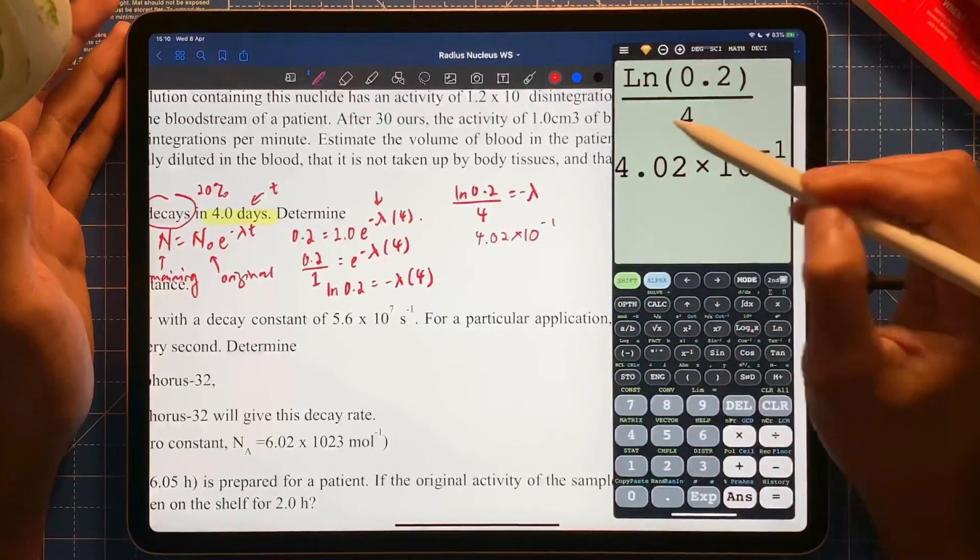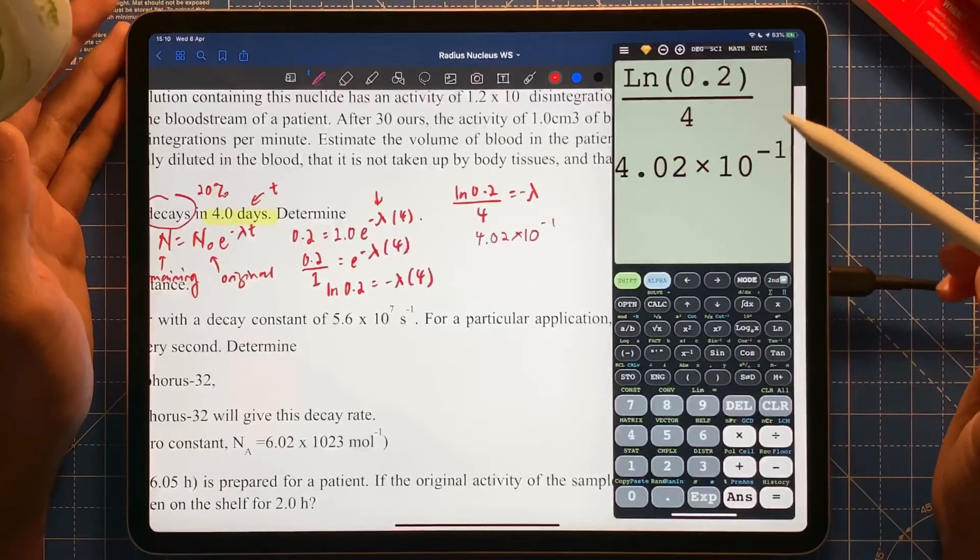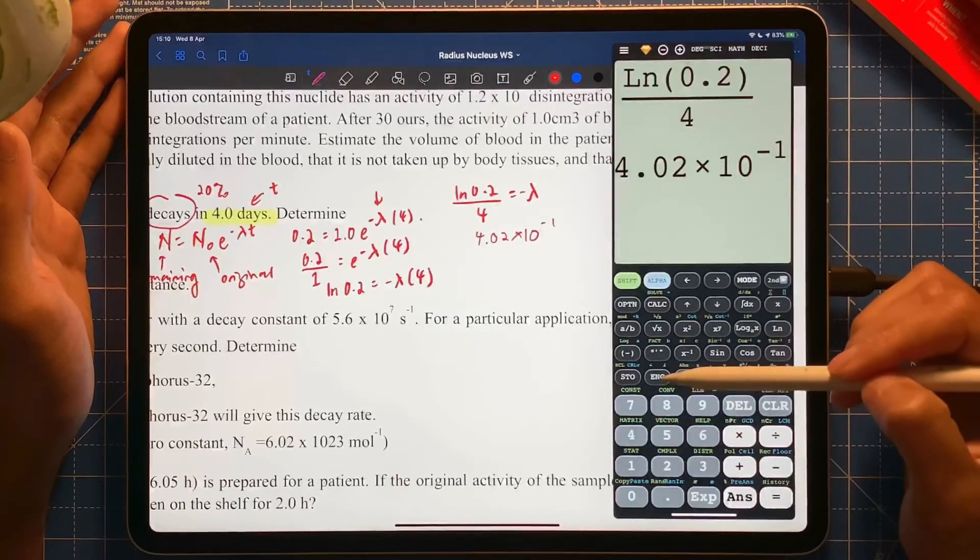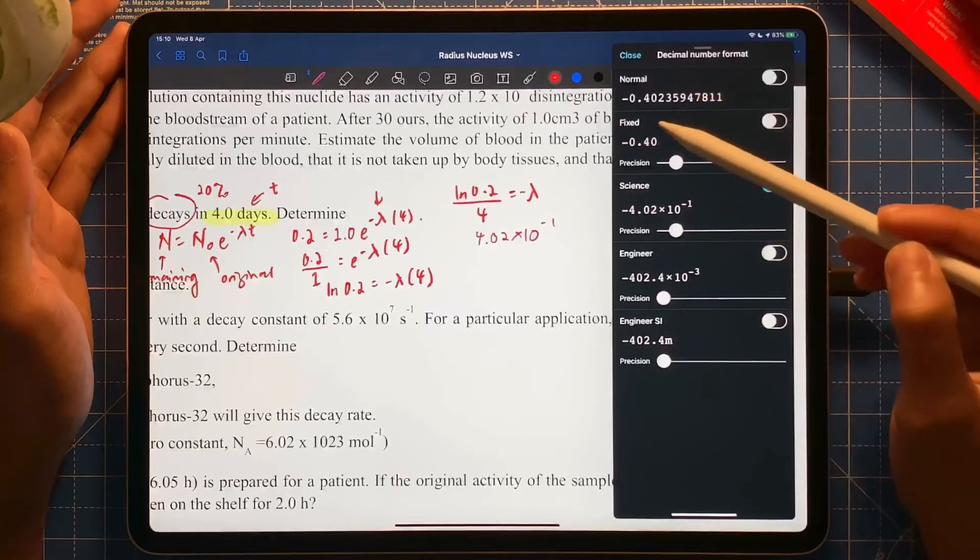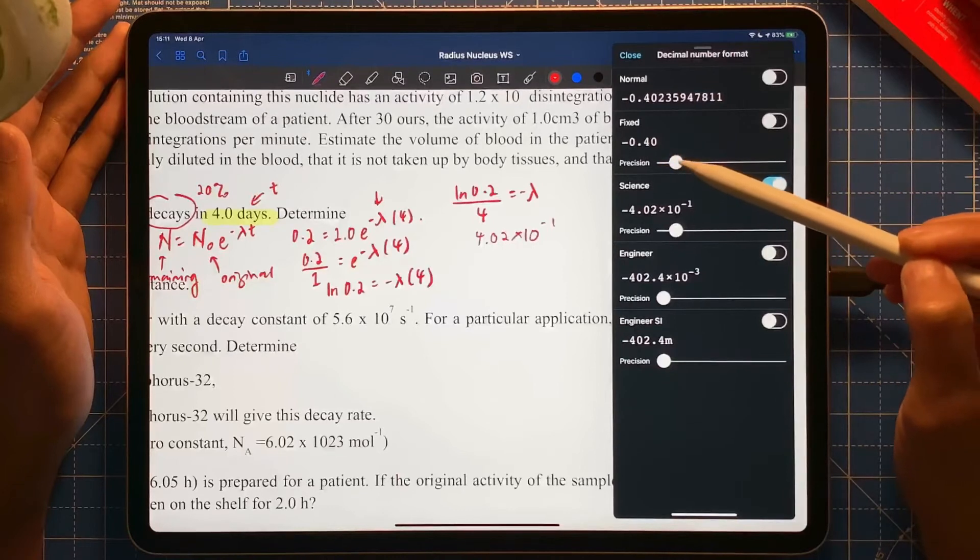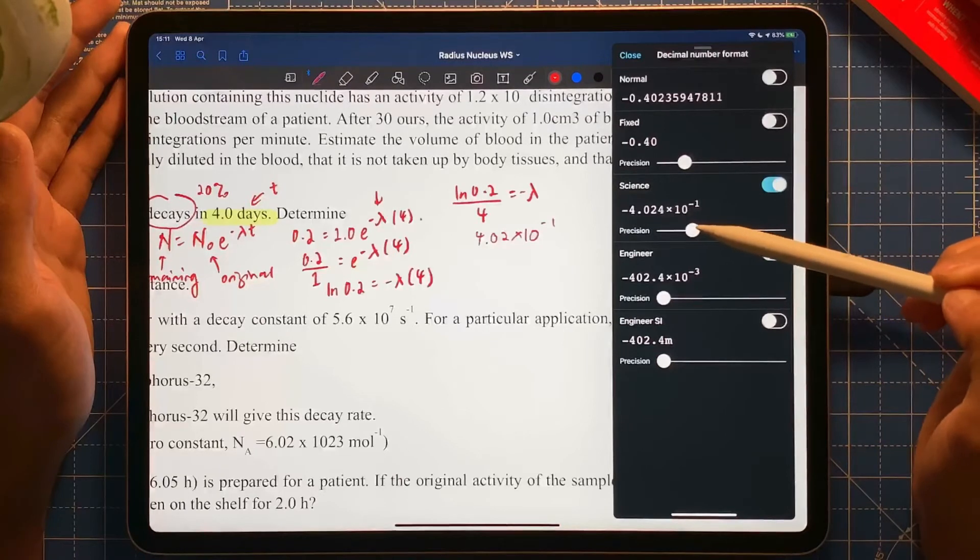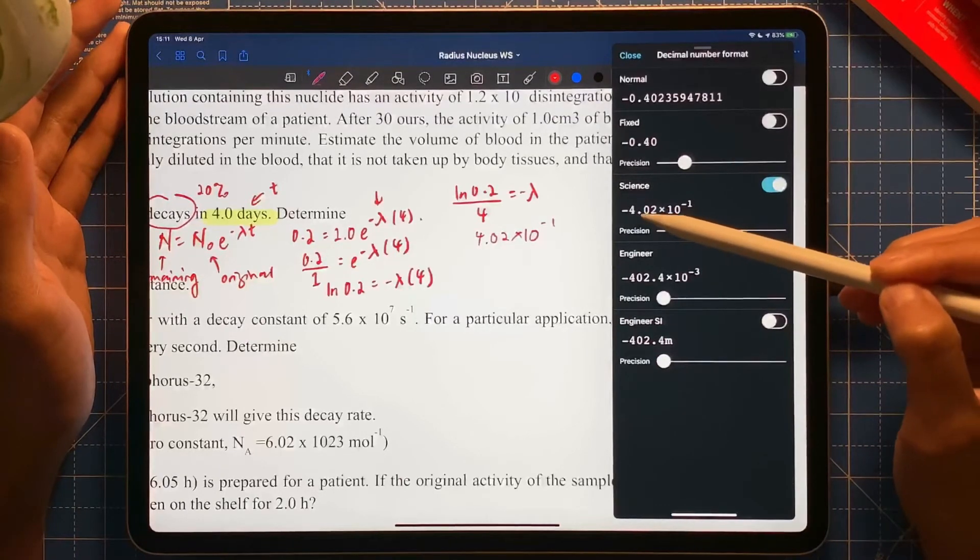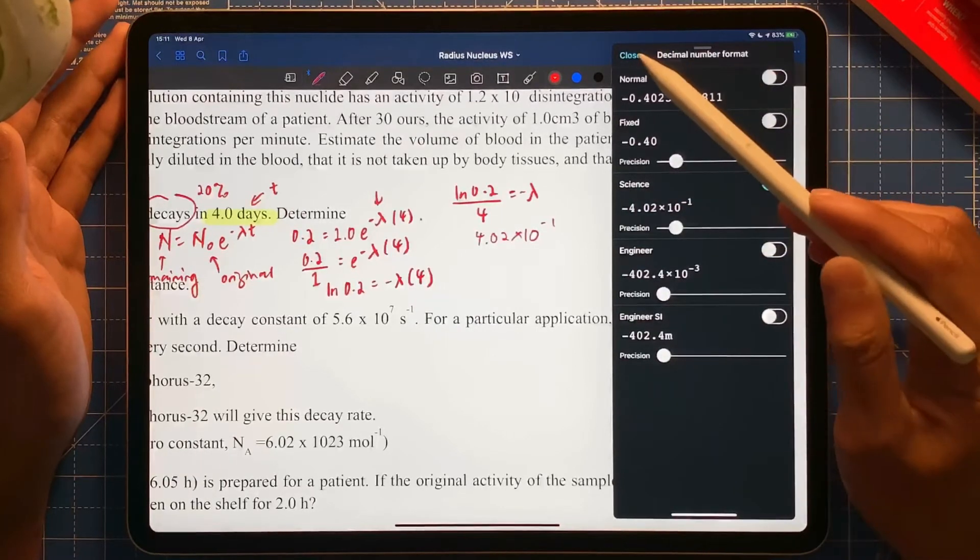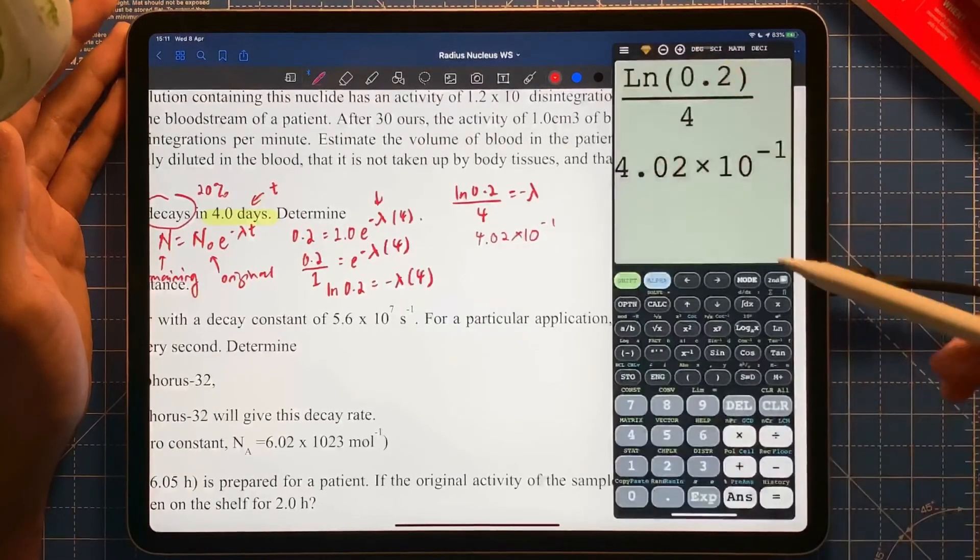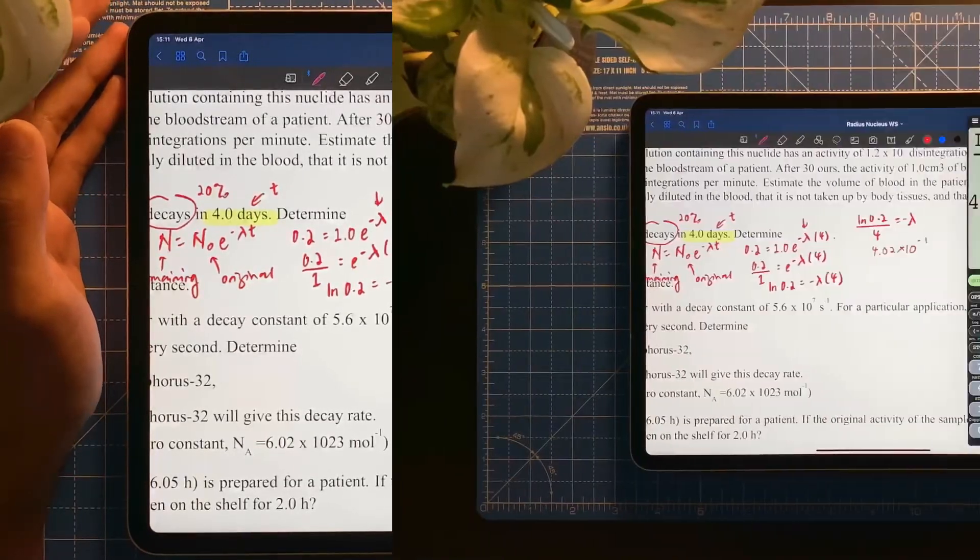So I can change this format by going to eng here. This is the decimal part. So I can have it normal, I can have it fixed, I can change the position, and I can have it in terms of standard form. So three significant figures in standard form, so I can select which one I would like. There we go, this is the basics.